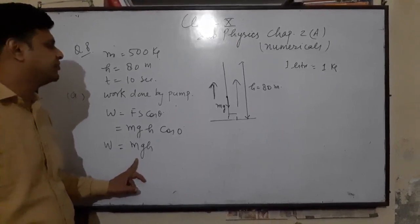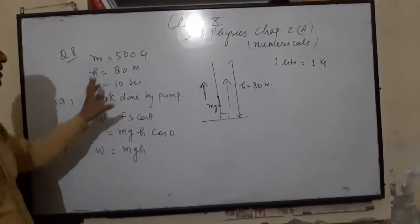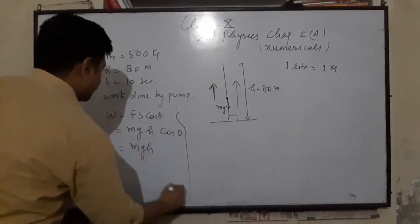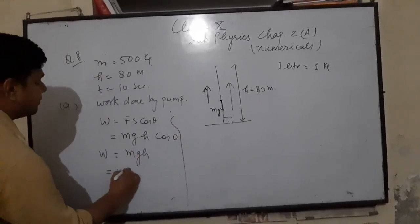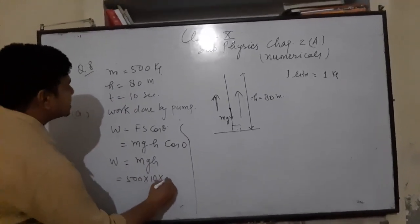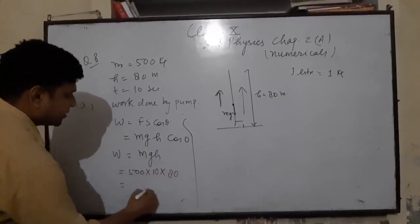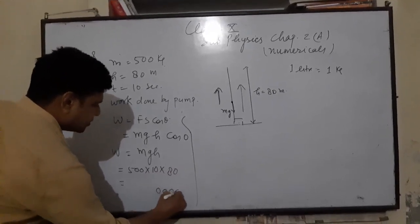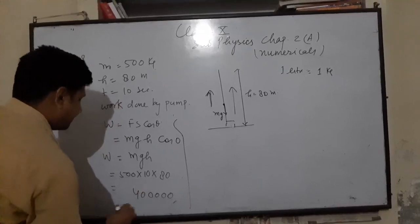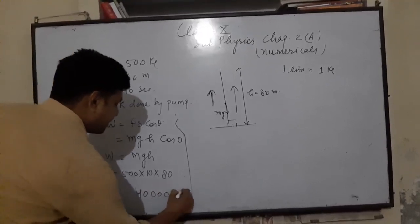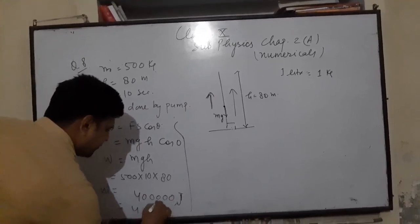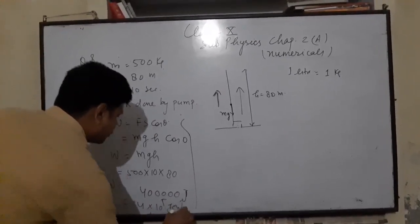Putting values: W = m × g × h = 500 × 10 × 80 = 4 × 10⁵ Joule.